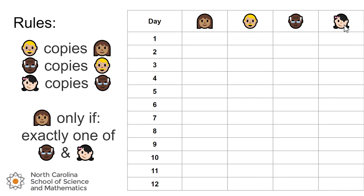They're going to act according to the rules dictated on the left. The blonde man is going to copy whatever the woman with the brown hair did the previous day. So if on day one the woman with the brown hair wore a hat, on day two the blonde man would wear a hat. The man with the white hair and glasses copies whatever the blonde man did the day before. And the woman with the bow in her hair copies whatever the man with the white hair and glasses did the day before.